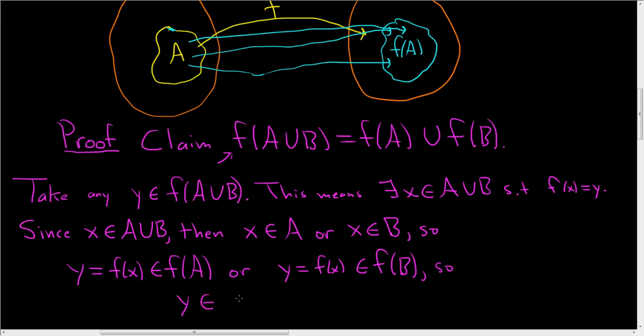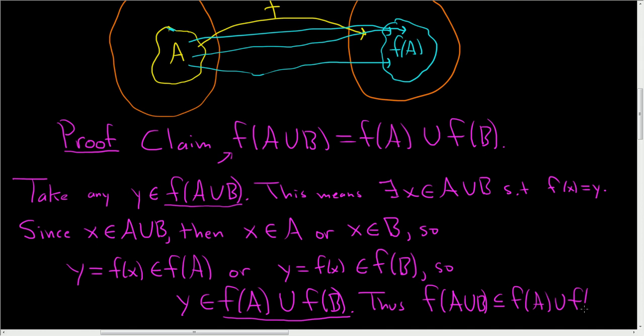That's precisely what it means for Y to be in the union of the direct image of A with the direct image of B all under F. So we started with a Y in this set, and we showed it belongs to this set. So therefore, F of A union B is contained in F of A union F of B.